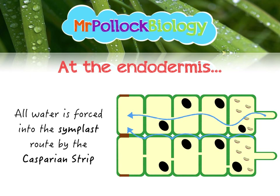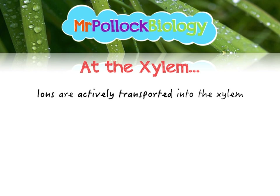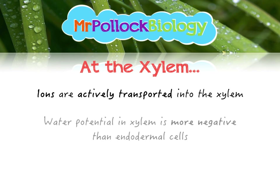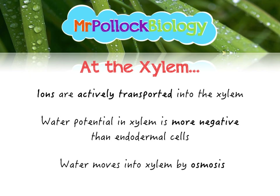Finally, when we get to the xylem, the only route into the xylem is through the symplast route. We've got the same sort of process as we had at the root hair cells: mineral ions are actively transported into the xylem, causing the water potential of the xylem to become more negative than the endodermal cells. Water then moves into the xylem by osmosis.